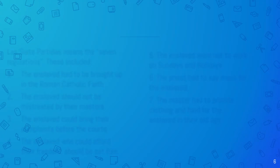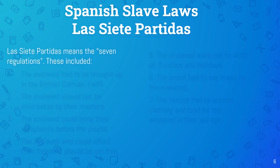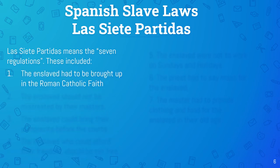Now let's look at the different slave laws throughout the colonies — French, Spanish, and English territories. The Spanish slave laws were known as Las Siete Partidas, which simply means 'the seven regulations.' Siete in Spanish means seven. These were the laws governing the Spanish slave colonies.